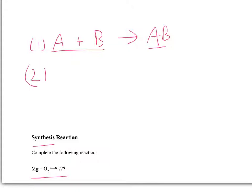Now for part two, we'll take our two reactants, magnesium and diatomic oxygen, and put them together. Since we're putting A and B together to make AB, let's do that so we end up with MgO.